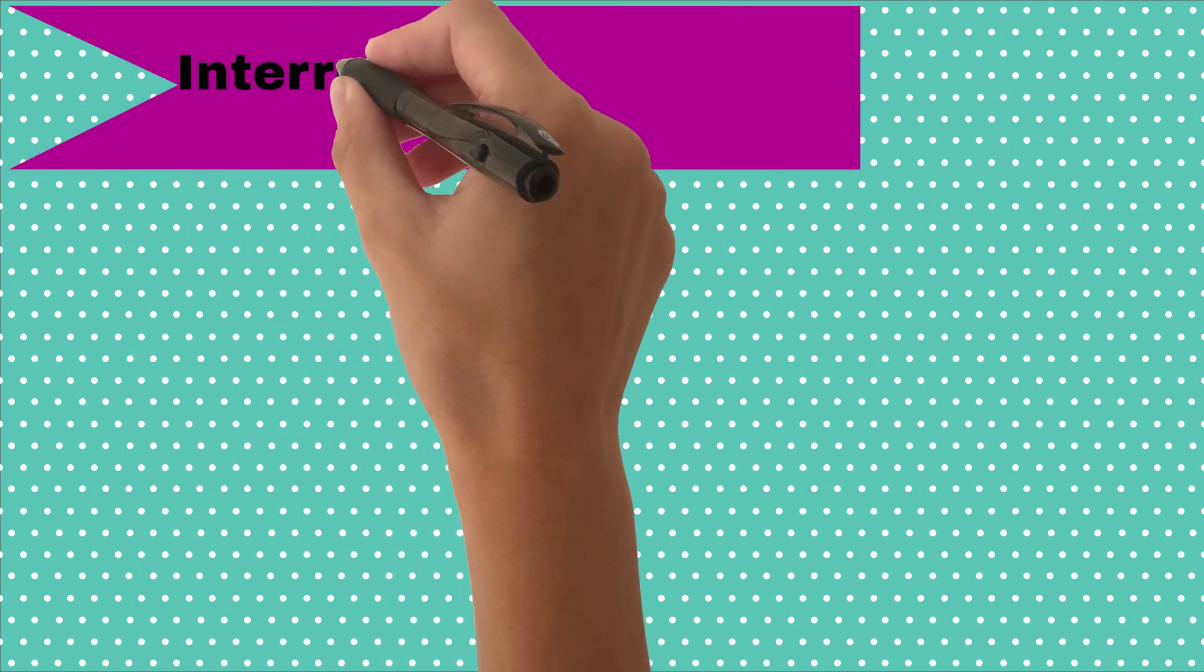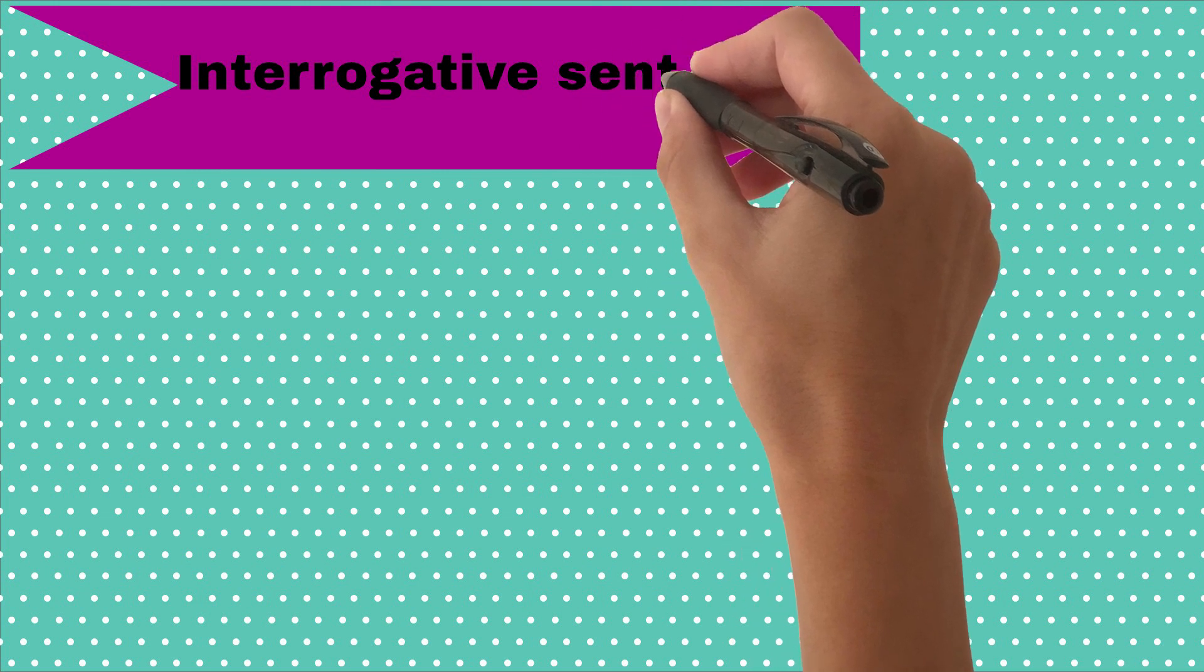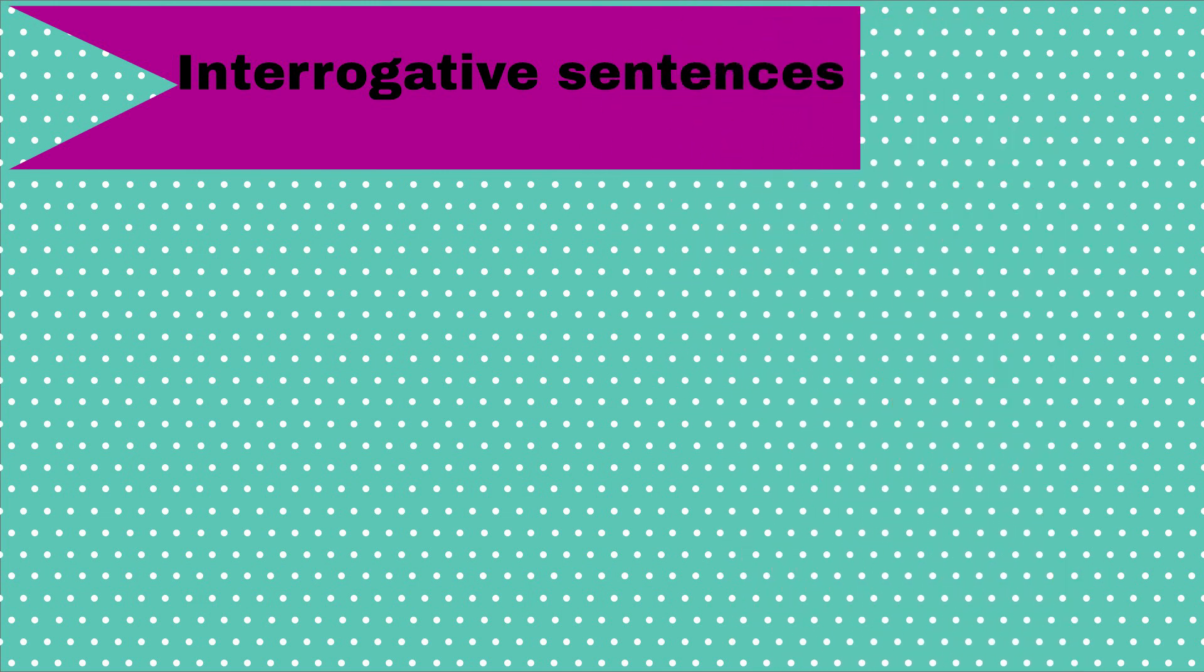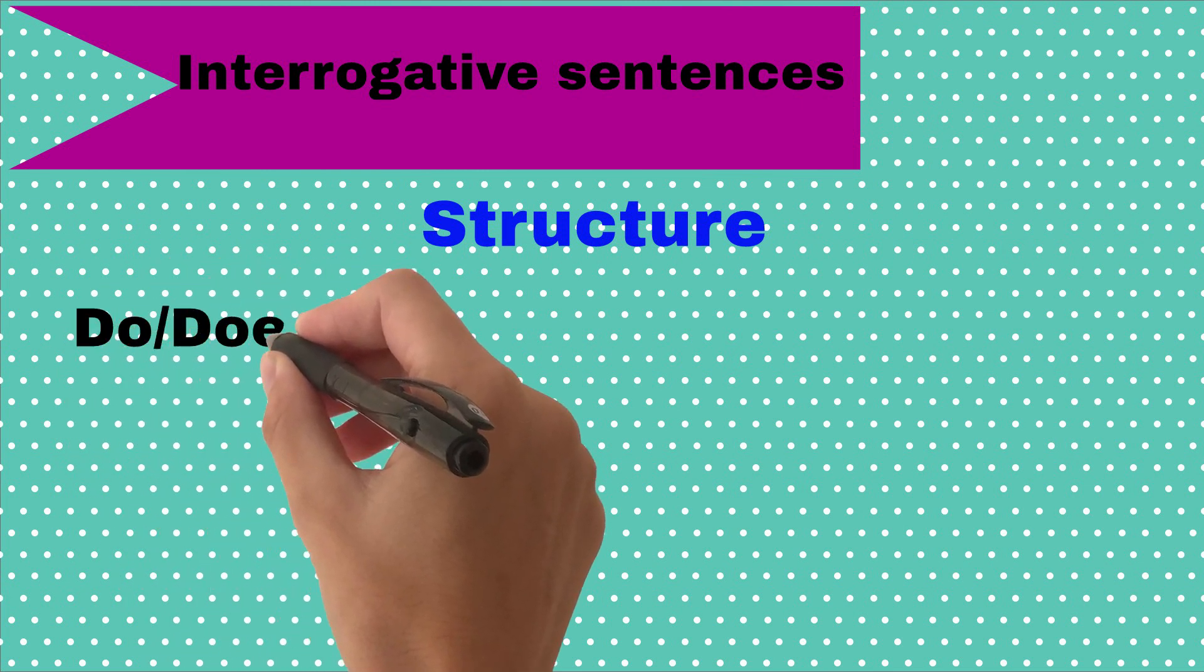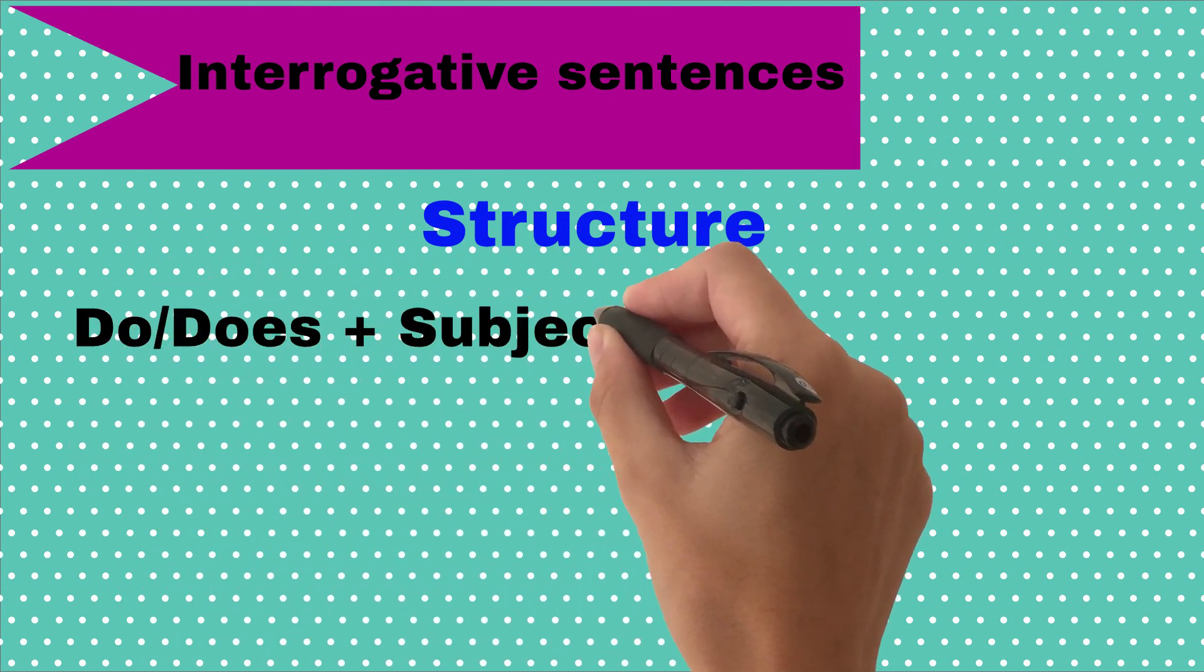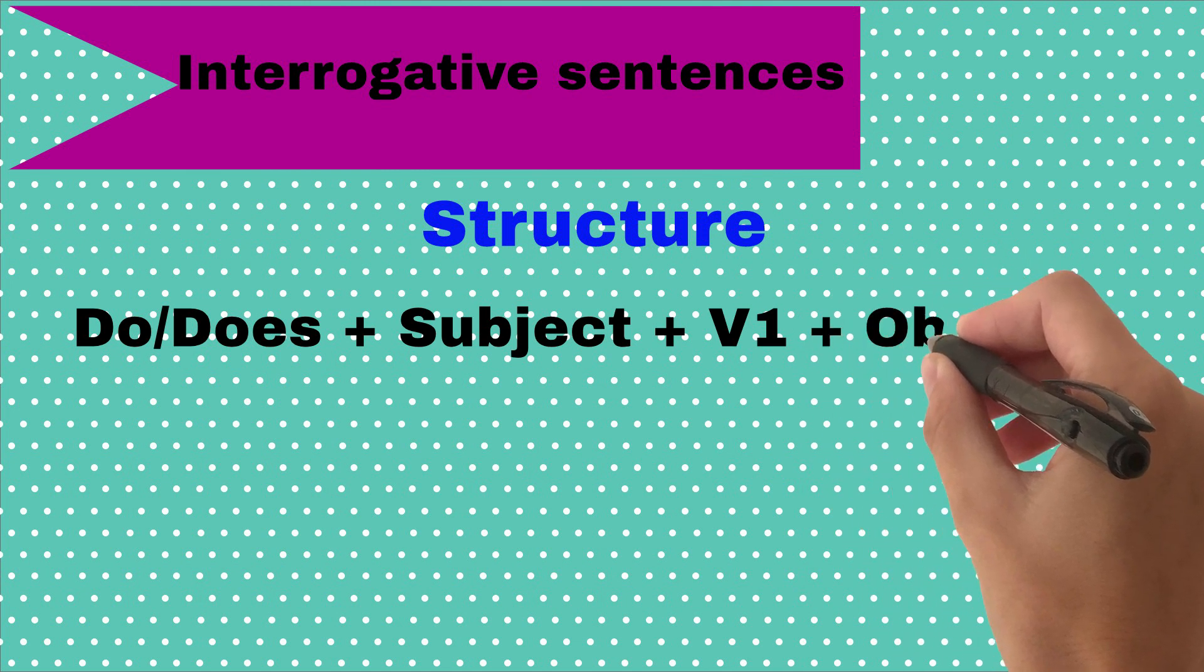Now, let's discuss the formation of interrogative sentences. Its structure is: Do or does, plus subject, plus first form of verb, plus object.